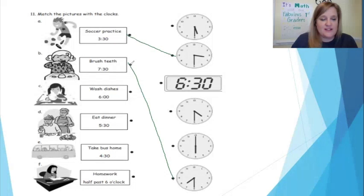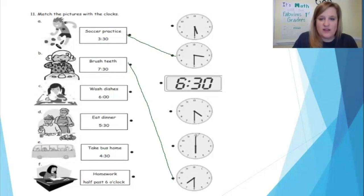Great, let's check the next one together. Wash dishes at 6 o'clock. So let's see — no, that's 5:30. 6:30. Well, this one was 4:30. Here's 6 o'clock. I know it's the only o'clock time that we have on here because the minute hand points straight up.